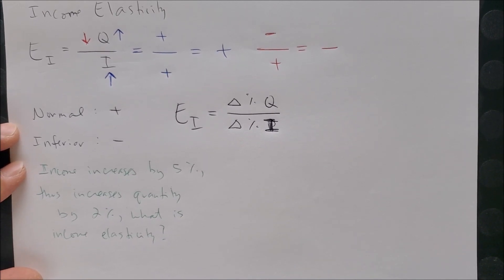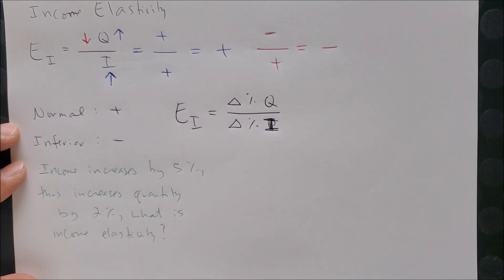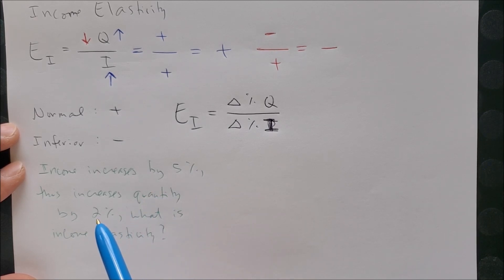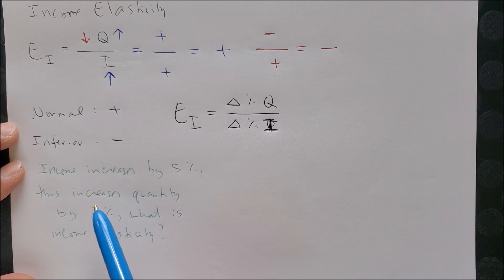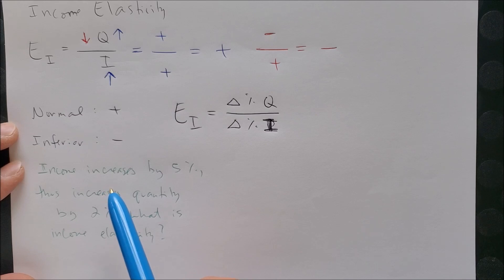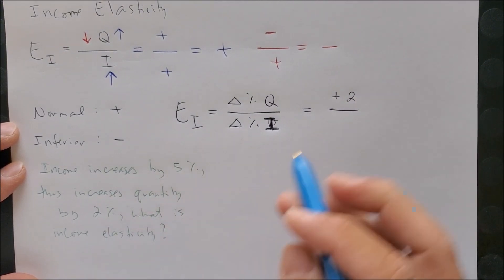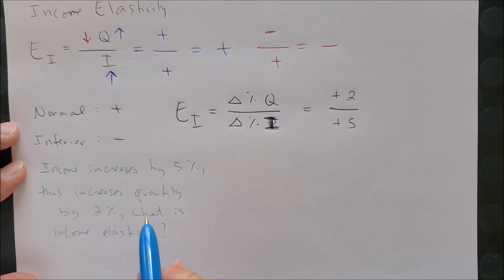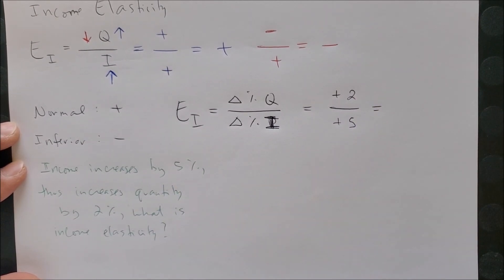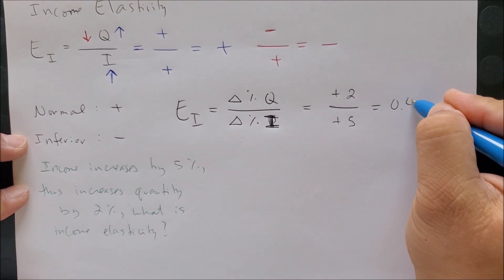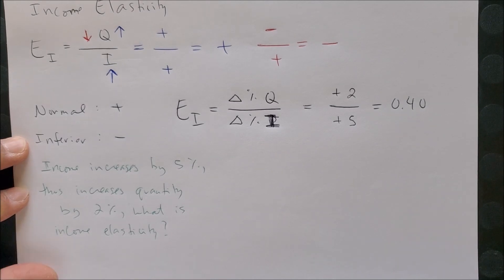So hopefully now you had a chance to look at the question at hand, and we can see that both numbers are already in percent format. So all that we have to do now is plug in which represents quantity—in this case 2%, it's increasing so it's positive—and income is 5%, also increasing so they're both positive. Now we can say that we have a positive 2 and a positive 5, and then now we can go ahead and calculate the answer. And once you have done that, you should get 0.40 as the answer.